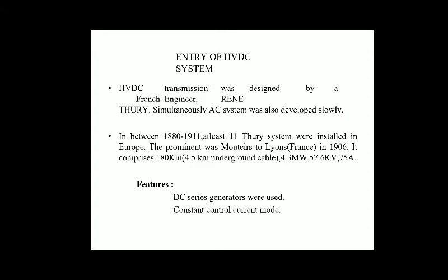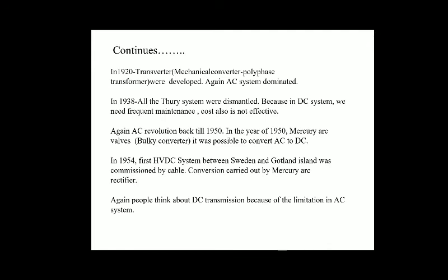Features of that system included DC series generators used in constant current control mode. In 1920, transverters — which are mechanical converter polyphase transformers — were developed. Again, AC systems dominated.